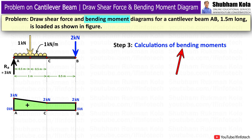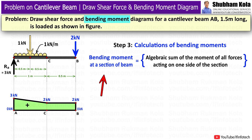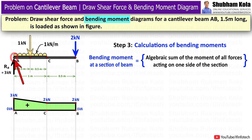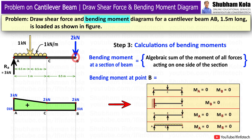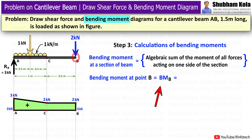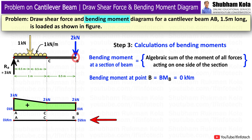The next step is the calculation of bending moment. The bending moment at a section is calculated as the algebraic sum of moments of all forces acting on one side of the section. I will start from the right end of the beam. For bending moment calculations, remember: for a cantilever beam, at the free end, the bending moment is 0. That is, bending moment at B equals 0kN. I will draw the reference line of 0kN bending moment and mark this value.